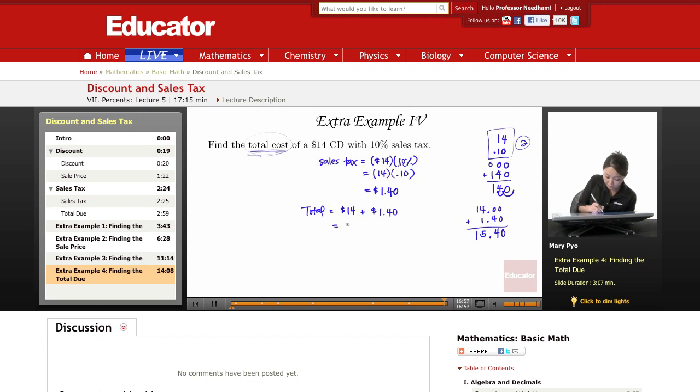So how much am I paying? $15.40. So that's how much I have to pay for a $14 CD if I have to pay for sales tax.